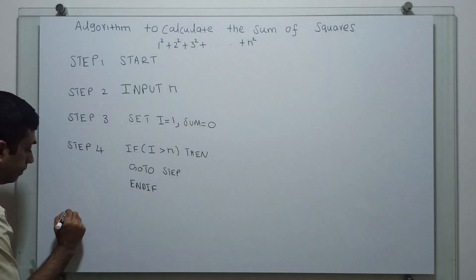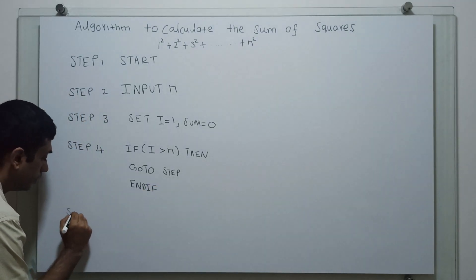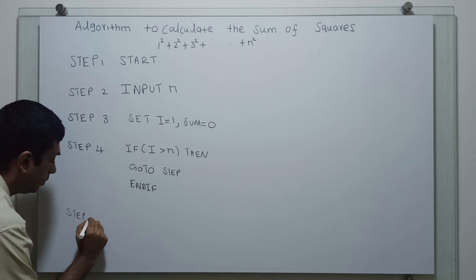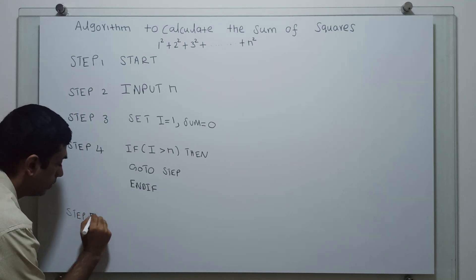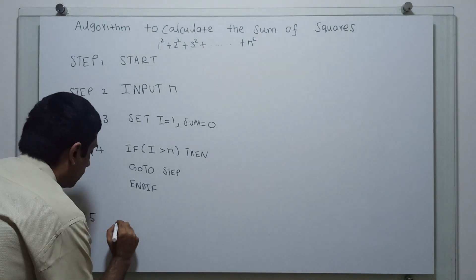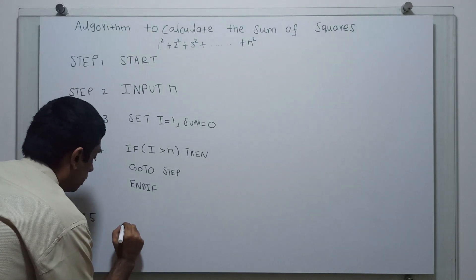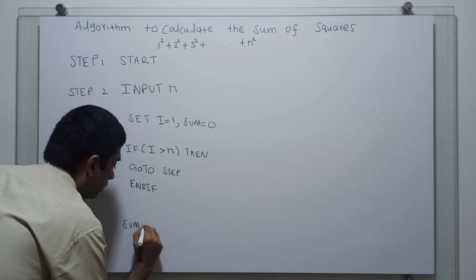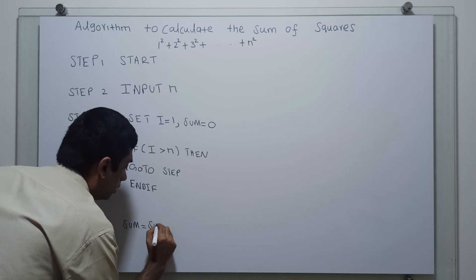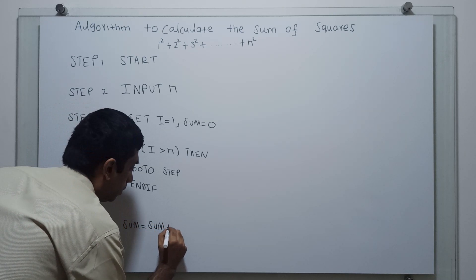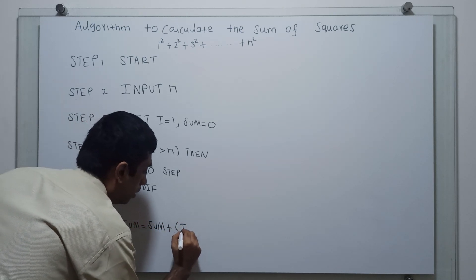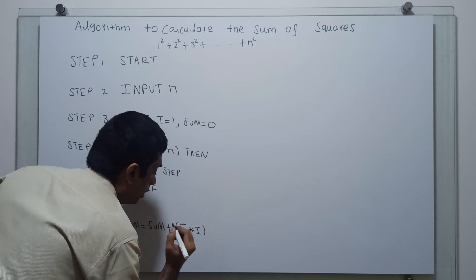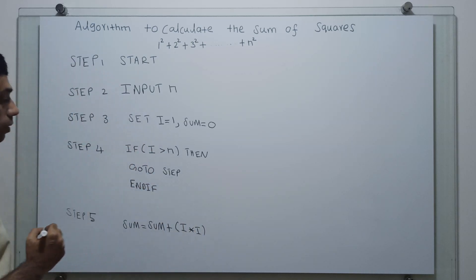Step 5: sum equal to sum plus i star i — that means the square of i.